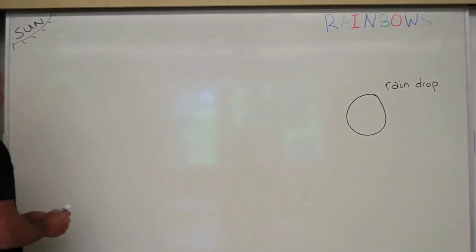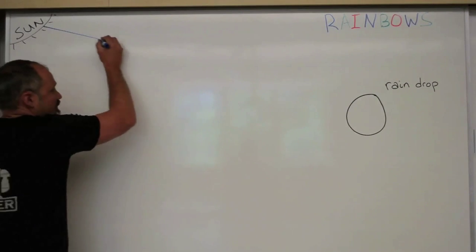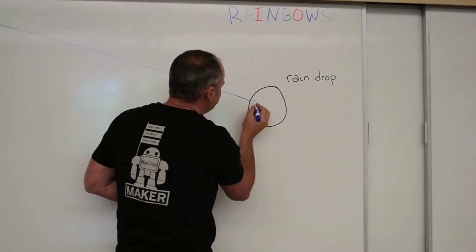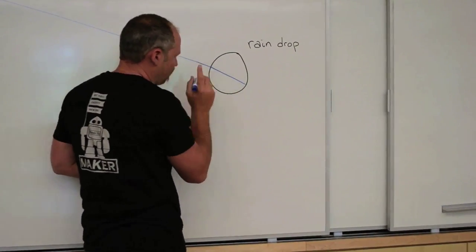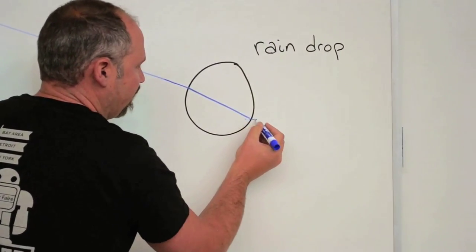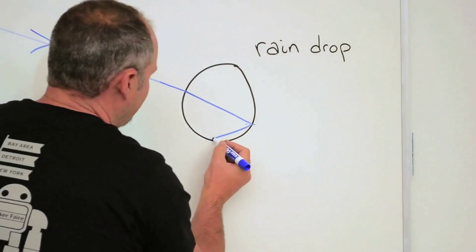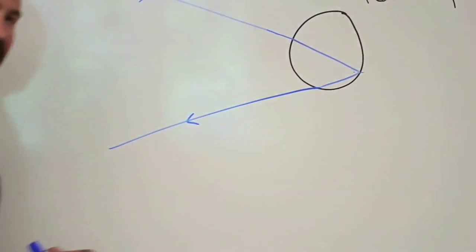So let's first take a ray of blue light coming from the sun to the raindrop. So here's our blue light. It enters the raindrop. It refracts more than the red light, as you'll see in a second. Here it just reflects. So whatever angle it comes in at, it reflects at that same angle out. And then it comes back out.